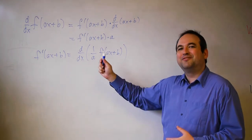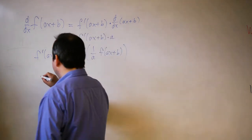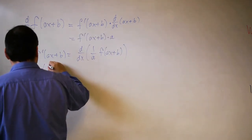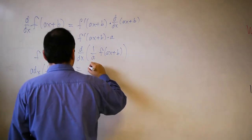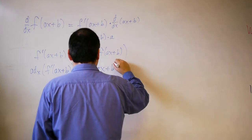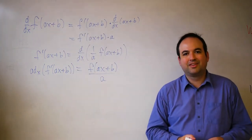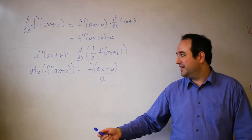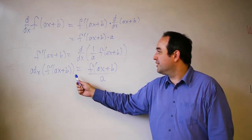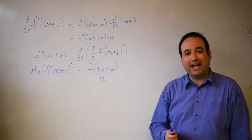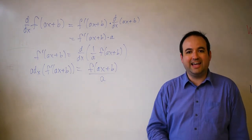This tells us that if we take the antiderivative of both sides, then the antiderivative with respect to x of f prime of ax plus b is equal to f of ax plus b divided by a. So in other words, when you're trying to anti-differentiate a function of a line, you first anti-differentiate f prime to get f, and then you divide by whatever constant is currently in front of the x.